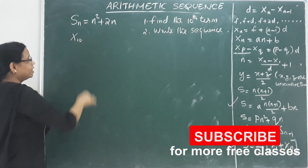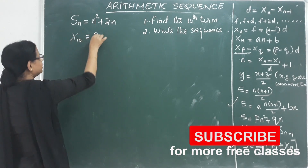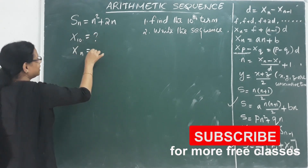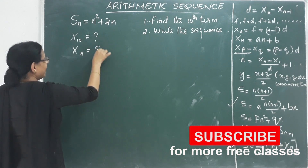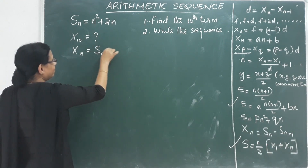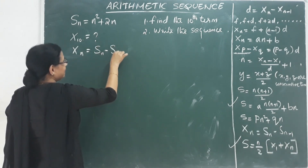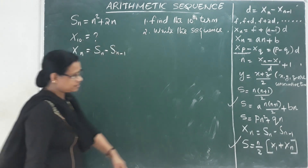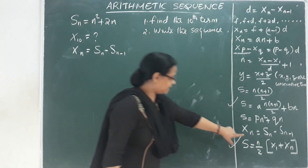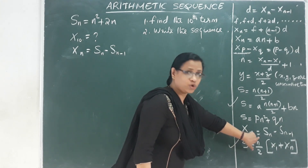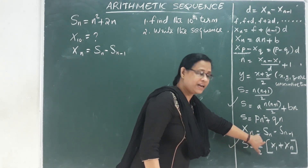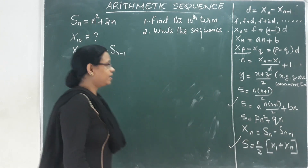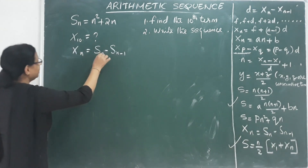We will use the formula: xn equals Sn minus S(n-1). This is the key formula to find individual terms from the sum formula.